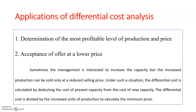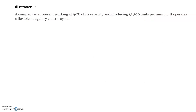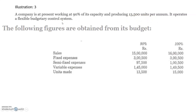This will be clear by checking the illustration below. The company is at present working at 90% of its capacity and producing 13,500 units per annum. The present capacity is 90% and the present number of units produced is 13,500. It operates a flexible budget control system.